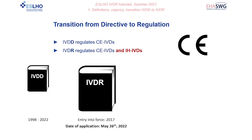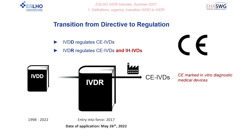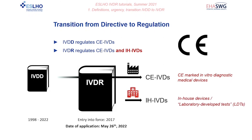The CE mark indicates that the product is manufactured according to the applicable EU legislation for that product type. So a CE-IVD is an IVD for which all requirements dictated by the applicable EU legislation are fulfilled. The main focus of the new legislation, the IVDR, is still on CE-IVDs. However, the IVDR also dictates requirements for in-house devices used by diagnostic laboratories, which are also known as laboratory-developed tests. This means that for the first time, EU legislation on IVDs becomes relevant for diagnostic labs that use in-house devices, as they will have to comply with the IVDR requirements.